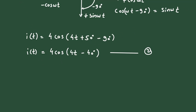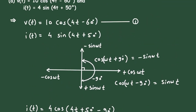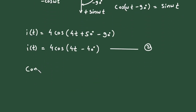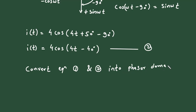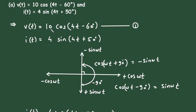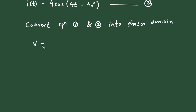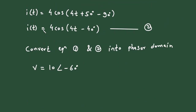Now we have V(t) = 10 cos(4t − 60°) and I(t) = 4 cos(4t − 40°). We convert equations 1 and 2 into the phasor domain. The voltage phasor is V = 10∠−60° and the current phasor is I = 4∠−40°.